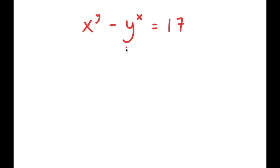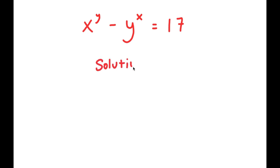So in this problem, I have x to the power of y minus y to the power of x is equal to 17. To solve this problem, I'm going to first rewrite the equation right here.